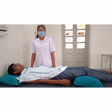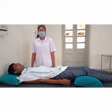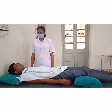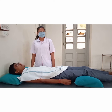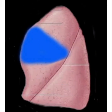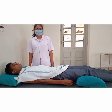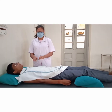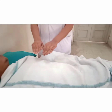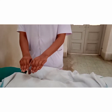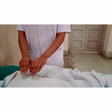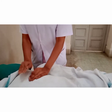Percussion is most beneficial when it combines with postural drainage position. Here we performed percussion for the entire segment of the left upper lobe. The hand should be in a curved shape with fingers and thumb adducted. Rate should be 100 to 480 times per minute.